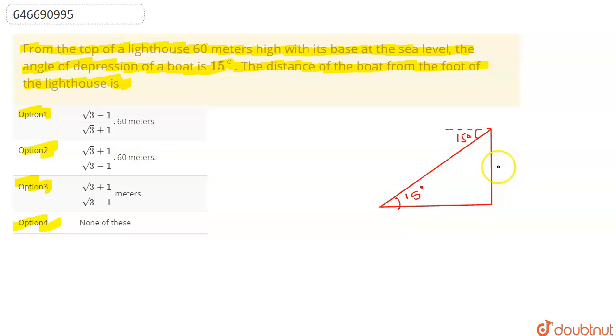...height of lighthouse is 60 meters, so we have to find this distance. Let's say this distance is x. Okay, let's say this point is A, this point is B and this point is C. So in triangle ABC we can say that...